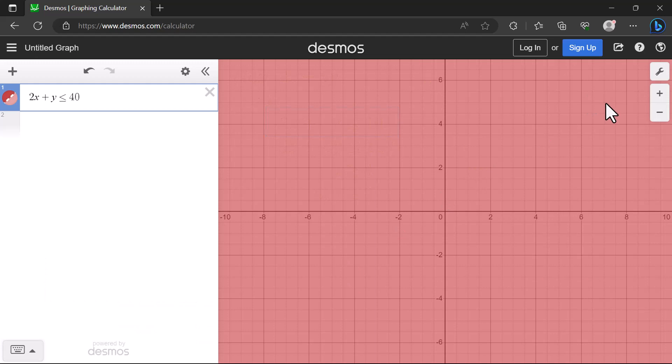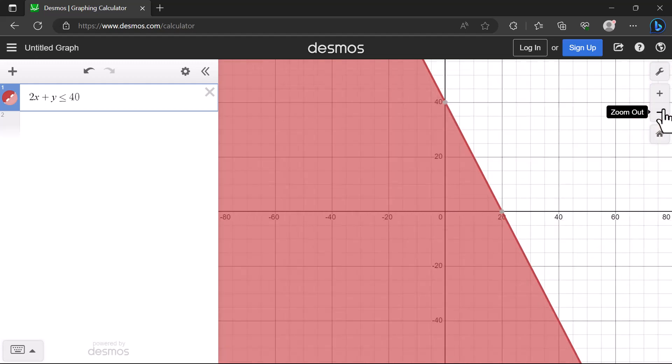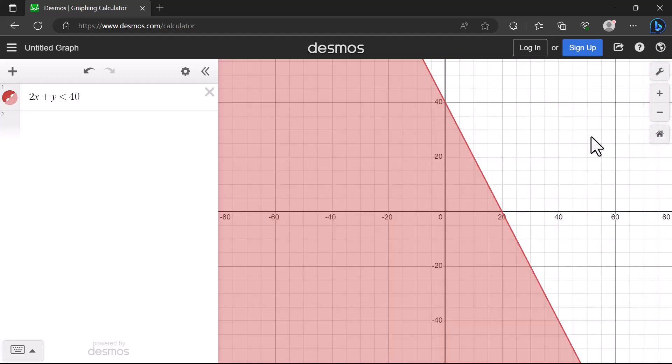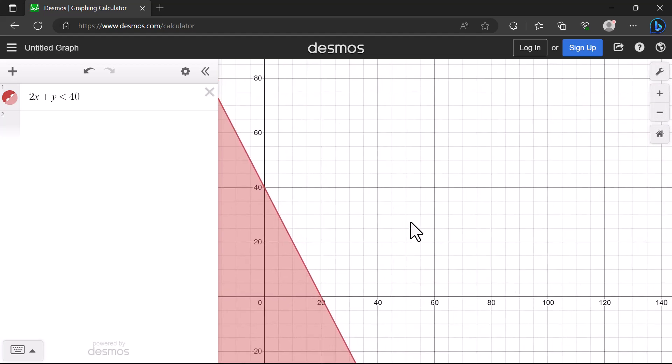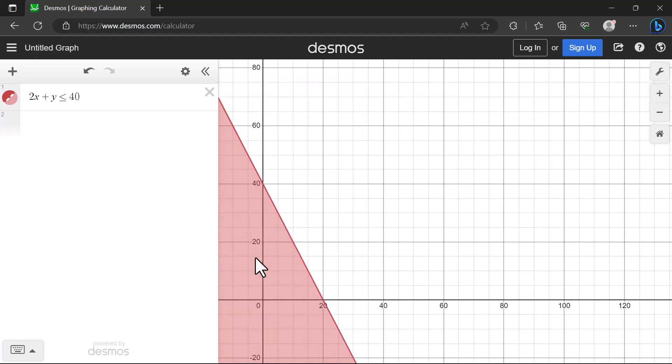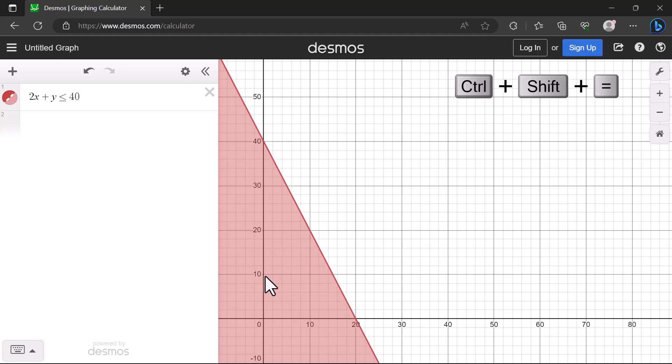Now I'm going to zoom out by clicking the minus button a few times. I can click anywhere on the graph and drag to the position I want. I can also press ctrl and scroll on the mouse to zoom.